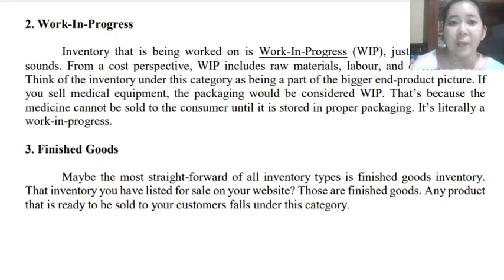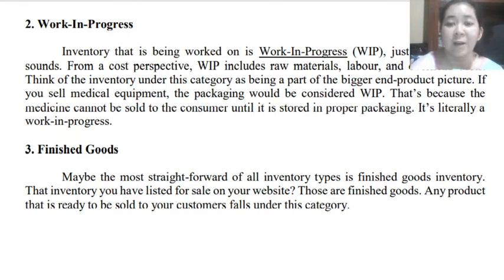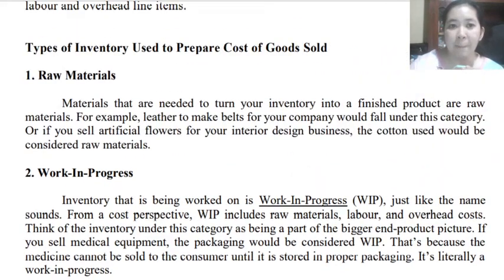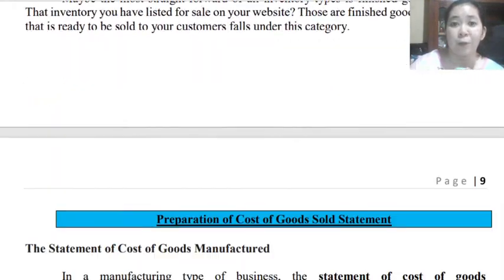Lastly, finished goods are the most straightforward of all inventory types because these are already goods that are readily saleable. Those are finished goods which you have already listed for sale — for example, on your website as an electronic store. Any product that is ready to be sold to your customer will fall under the finished goods inventory category. Those are the different types of inventory used in preparing our cost of goods sold.